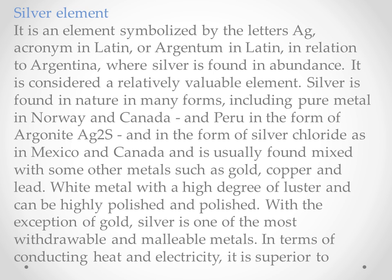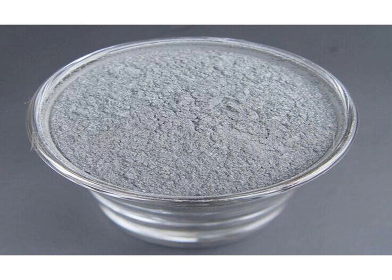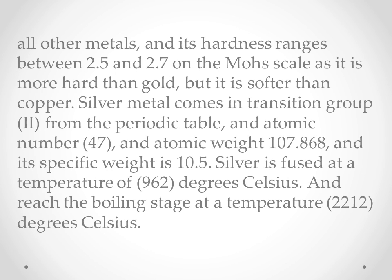Silver is a white metal with a high degree of luster and can be highly polished. Along with gold, silver is one of the most ductile and malleable metals. In terms of conducting heat and electricity, it is superior to all other metals. Its hardness ranges between 2.5 and 2.7 on the Mohs scale, making it harder than gold but softer than copper.